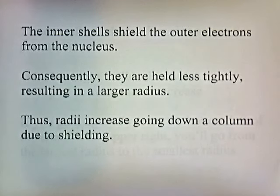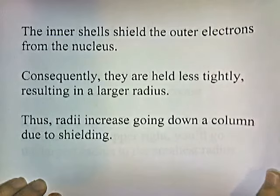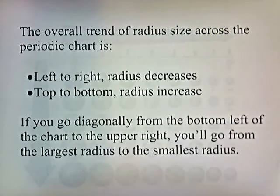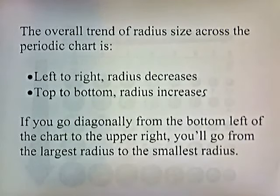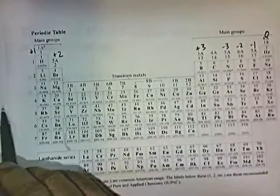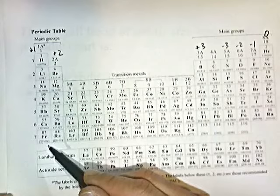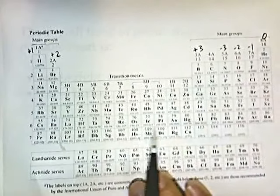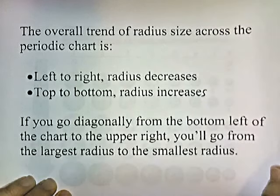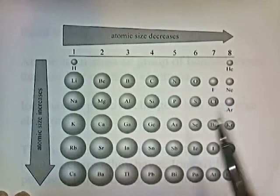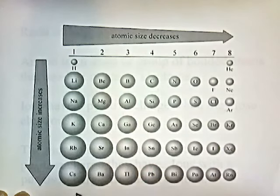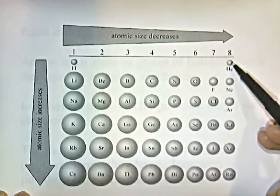Thus, radii increase going down a column due to shielding. The overall trend of radius size across the periodic chart is: left to right, radius decreases; top to bottom, radius increases. If you go diagonally from the bottom left of the chart to the upper right, you'll go from largest radius to smallest radius. There's a nice picture here showing the general trend — see how the radius gets smaller as you go from left to right, and bigger as you go down.